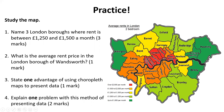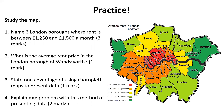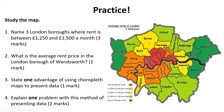State one advantage of using choropleth maps to present data. As we said earlier, it's very easy to spot patterns — the obvious pattern here is the closer to the centre you are, the higher the rent. And finally, explain one problem with this method of presenting data. Choropleth maps don't show variation within each borough, so the data may be misleading. For example, looking at Barnet, it doesn't mean all properties in Barnet will be that rent — in some parts they may be much higher, in some parts much lower. The choropleth map does not show that.